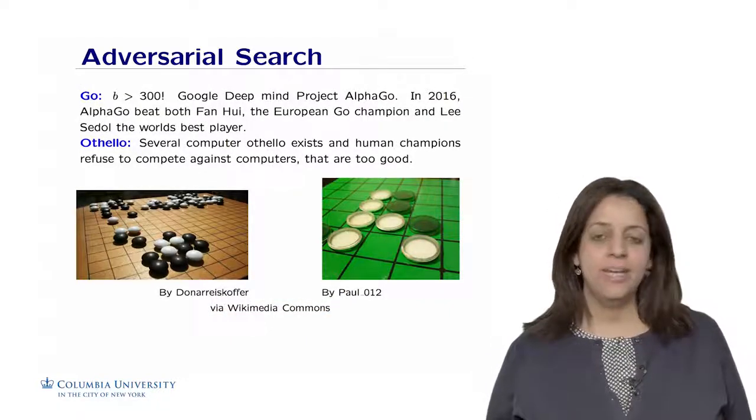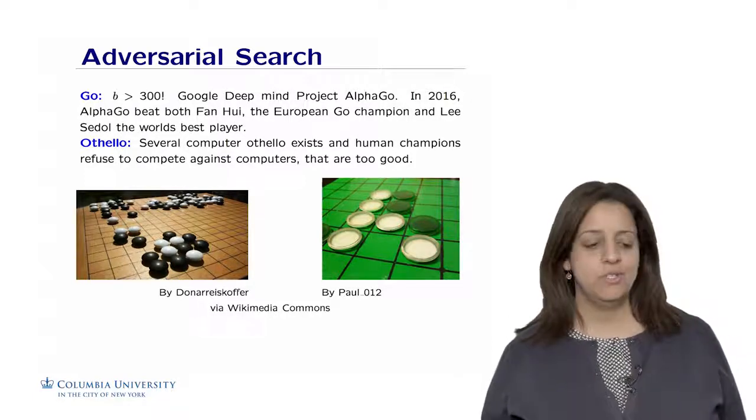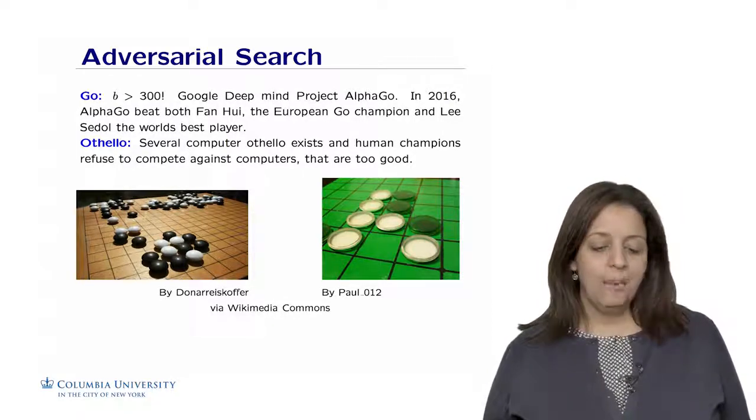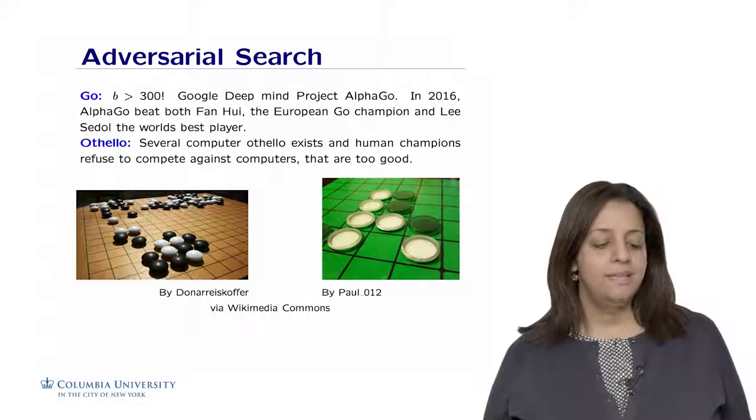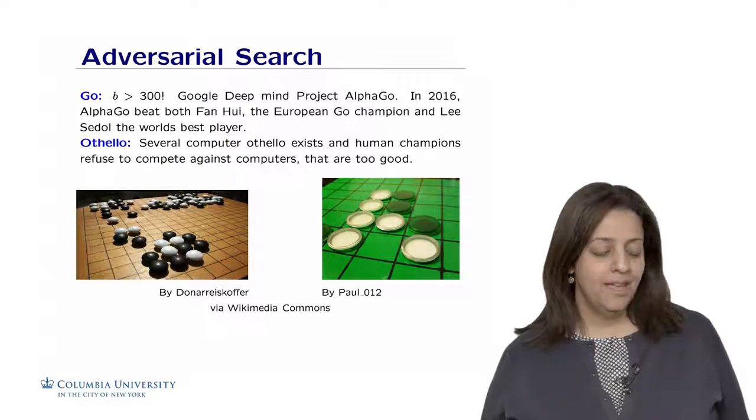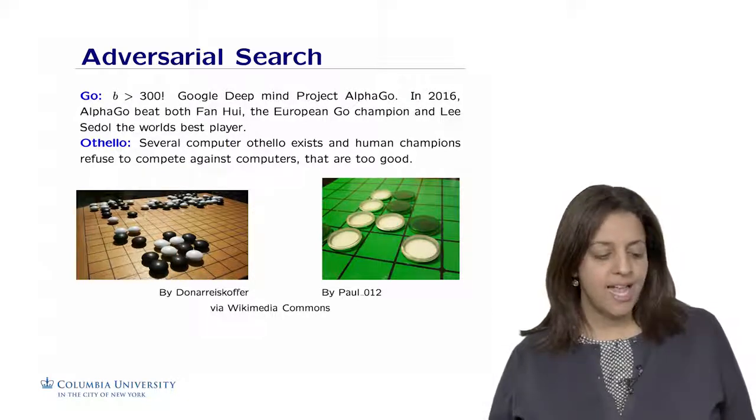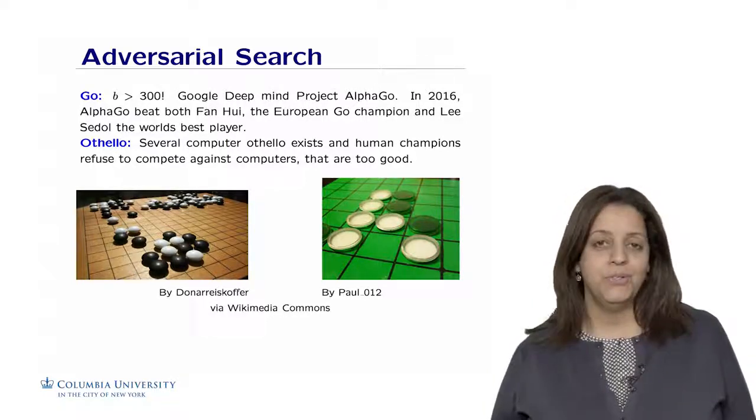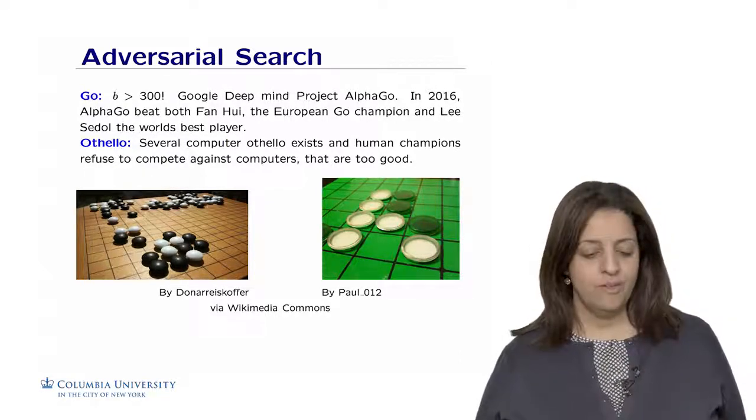Another complex game is Go, which until recently was considered intractable by AI because of its huge search space. The branching factor for Go is over 300. However, this year, the Google DeepMind project AlphaGo beat both Fan Hui, the European Go champion, and Lee Sedol, the world's best player. Othello is another game where computer programs are too good, and human champions refuse to compete against them.